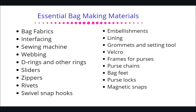We have zippers, we have rivets, we have swivel snap hooks, embellishments — which are decorative items and materials. By embellishments I mean purely decorative items. You have lining, which is the fabric used for the inside part of your bag. We have grommets and a setting tool. Grommets are also known as eyelets — those round things you use to make beautiful holes in your bags. Those are what we call grommets or eyelets, and the setting tool is what you use to apply the grommets to your bags.